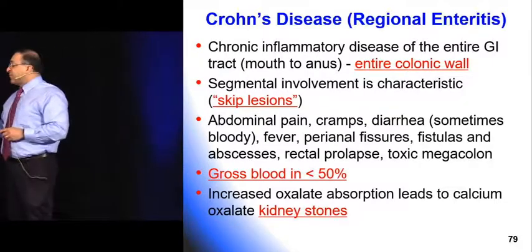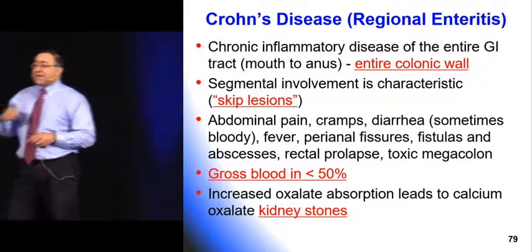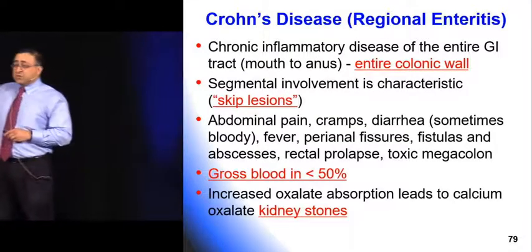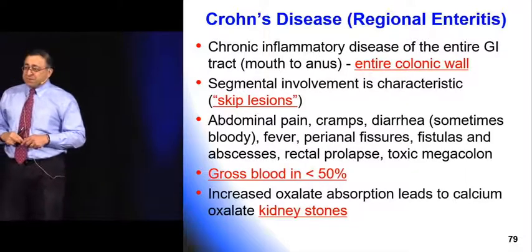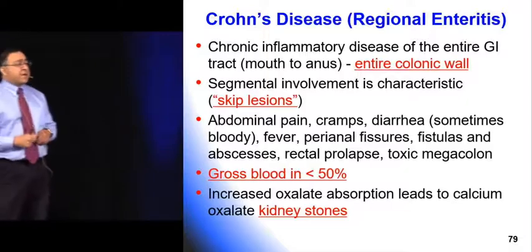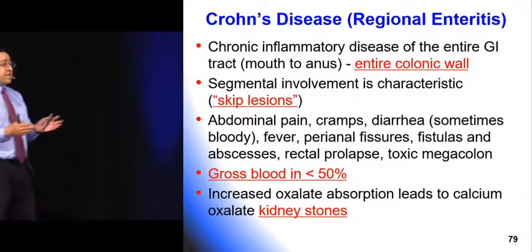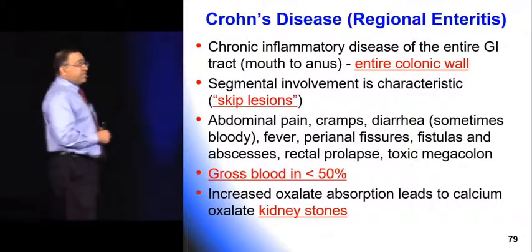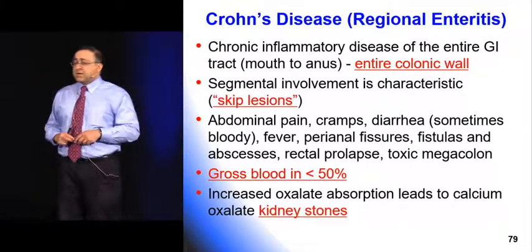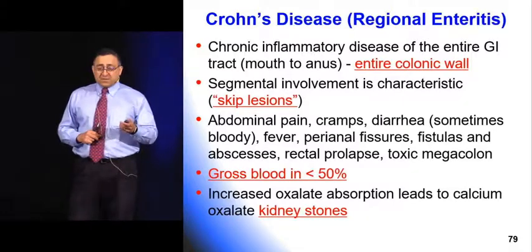In terms of blood in the stool, ulcerative colitis gives you bloody diarrhea in about 90–95% of cases, whereas Crohn's disease gives blood in less than 50% of patients. Crohn's disease is also associated with calcium oxalate kidney stones — so a patient with kidney stones who also has remitting lower GI symptoms should make you think about Crohn's disease.